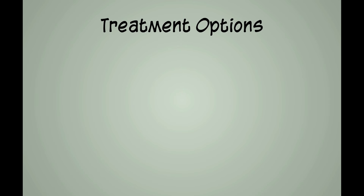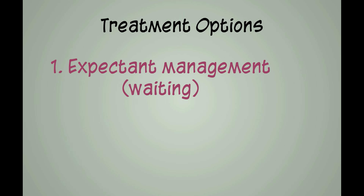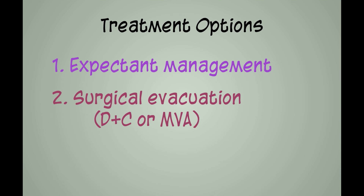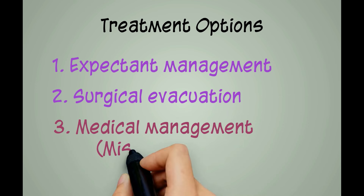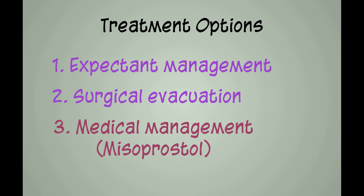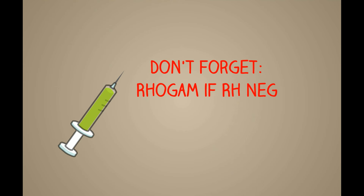There are three options when a woman has a spontaneous abortion. Expectant management is fine, and some women may want to see if their body will spontaneously miscarry. Surgical evacuation of the pregnancy can be performed with either a dilation and curettage in the operating room or a manual vacuum aspiration in a clinic setting. The third treatment option is medical management, which can be performed in the first trimester with vaginal misoprostol. Remember that if a patient is Rh negative, she will need a RhoGAM injection to protect against isoimmunization in future pregnancies.